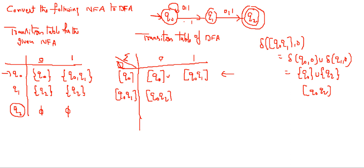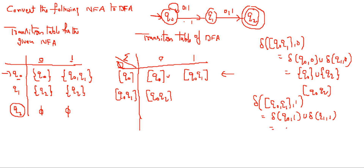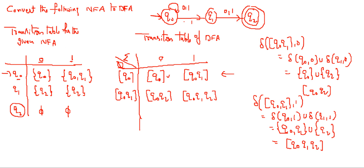Similarly, delta of {Q0, Q1} on input 1 equals delta(Q0, 1) union delta(Q1, 1). Applying 1 on Q0 gives {Q0, Q1}, and applying 1 on Q1 gives Q2. The union gives a new state {Q0, Q1, Q2}. So delta({Q0, Q1}, 1) = {Q0, Q1, Q2}. We now have two new states to process: {Q0, Q2} and {Q0, Q1, Q2}.